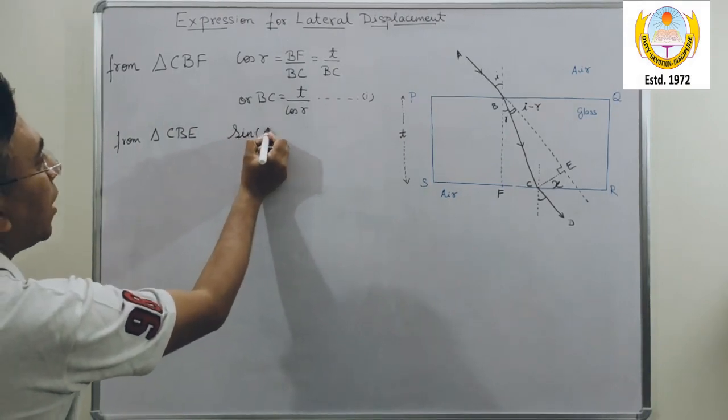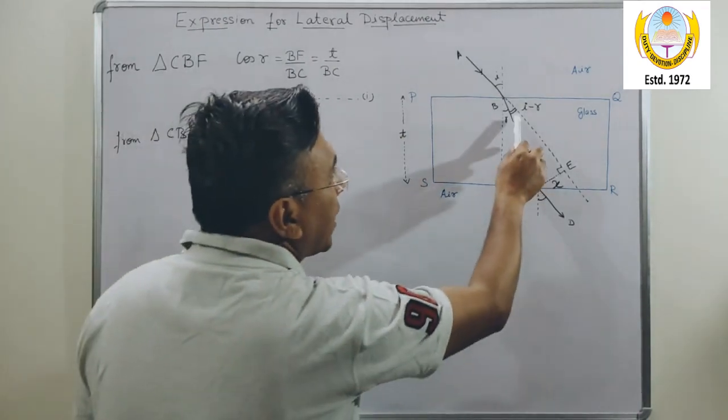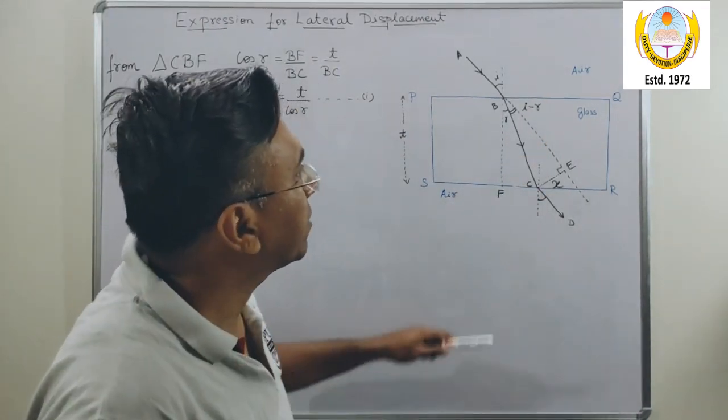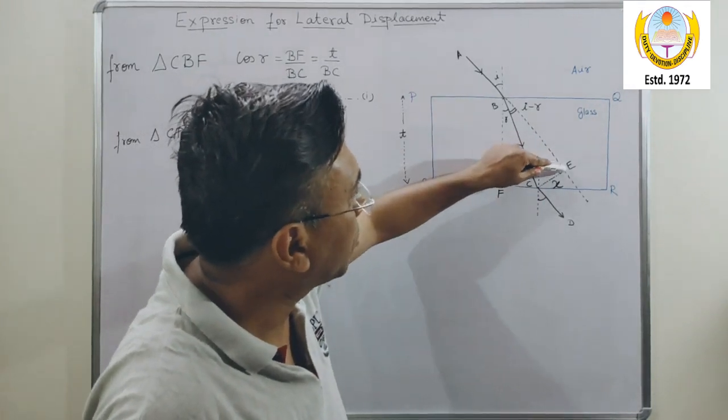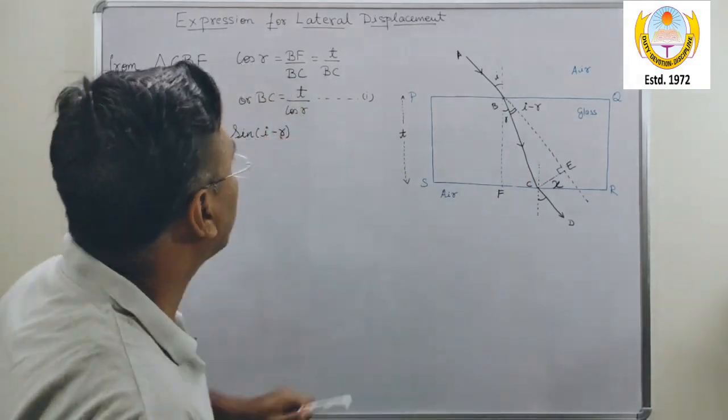sine of I minus R will be perpendicular upon hypotenuse. Perpendicular is CE, hypotenuse is BC. So I can write this as CE upon BC.